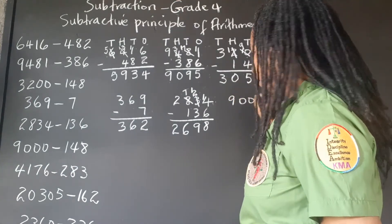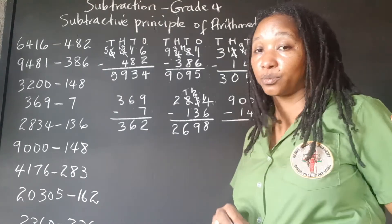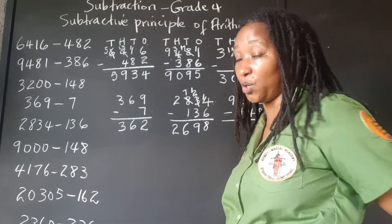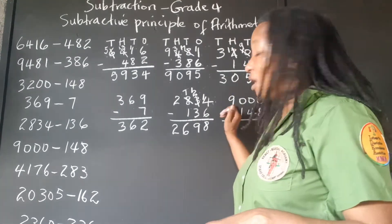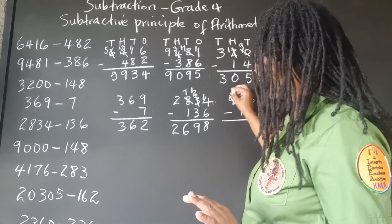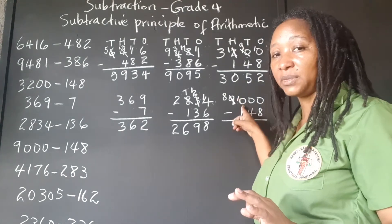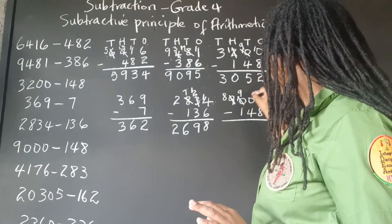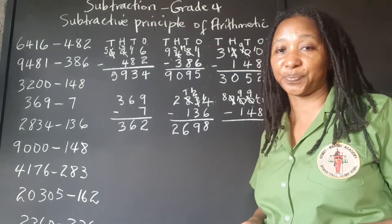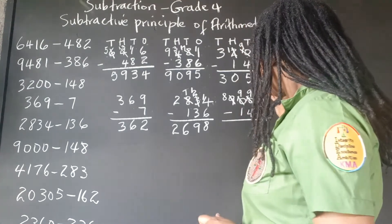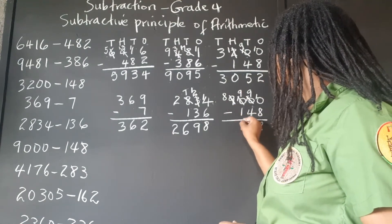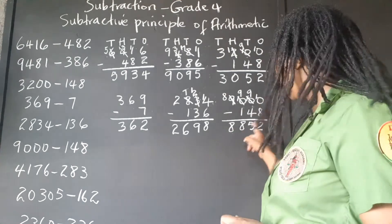9,000 take away 148. Now we have 3 zeros at the top — we know we're not supposed to just put back the 148. We have to go all the way to the 1,000s place and do 3 transfers. Take 1 from the 9 — 8 is left. We have 10 hundreds; take 1. We have 10 tens; take 1. Now we have 10 ones. 10 take away 8 is 2, 9 take away 4 is 5, 9 take away 1 is 8, bring down 8. Answer: 8,852.